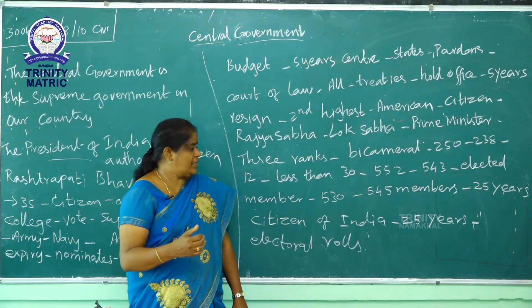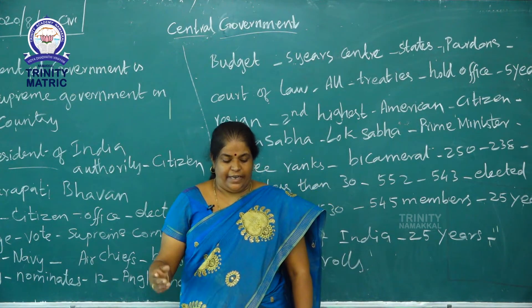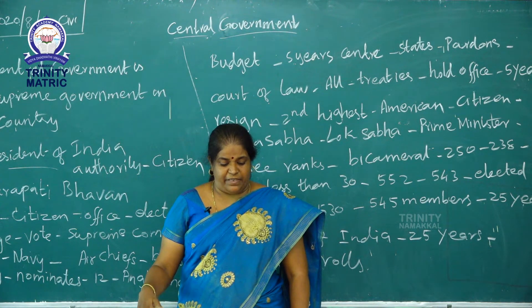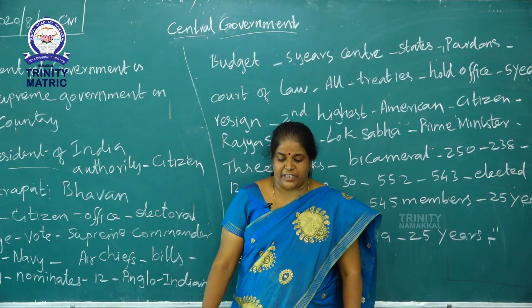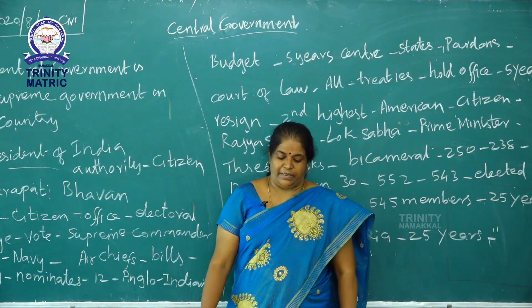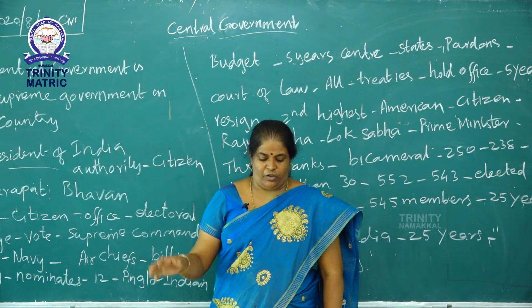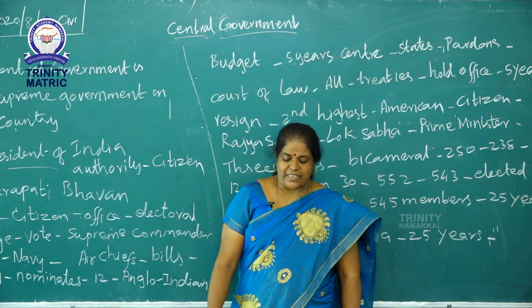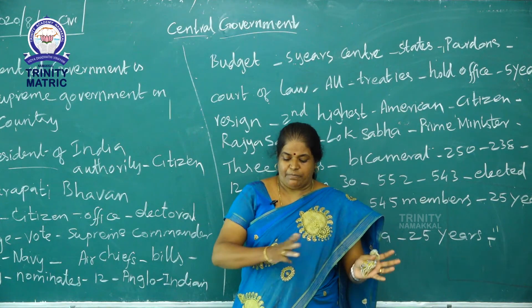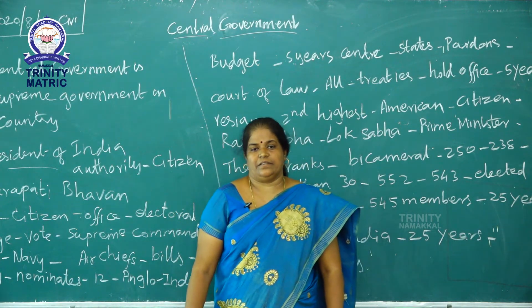Regarding the prime minister: India adopted this post on the Westminster model from England. The leader of the majority party in the Lok Sabha is appointed by the president as prime minister. Other ministers are appointed by the president on the advice of the prime minister. The prime minister is the head of the cabinet, supervises the work of various ministers, and acts as the link between the president and the council of ministers. The rest will be discussed in another class. Thank you.